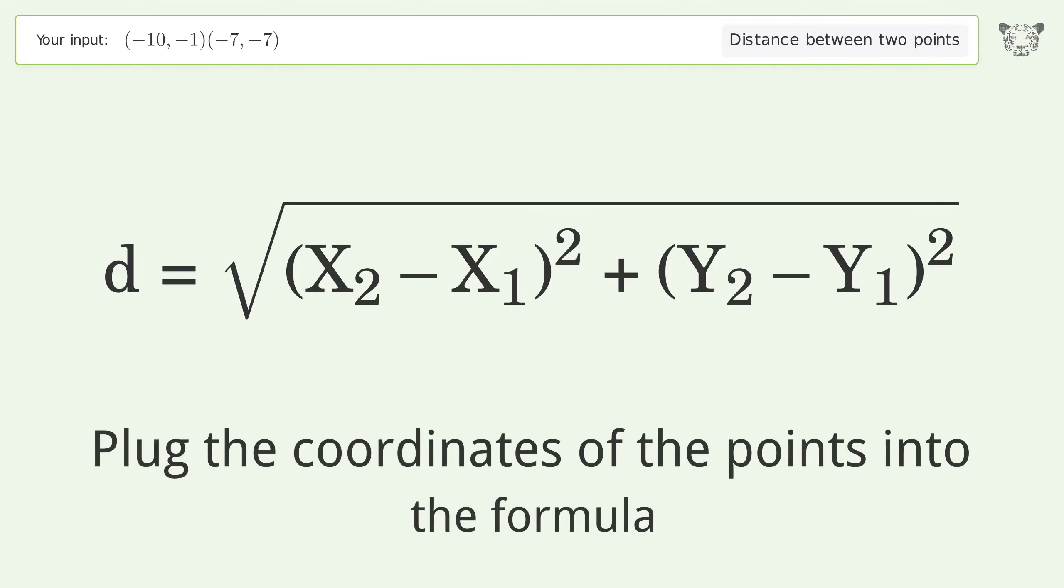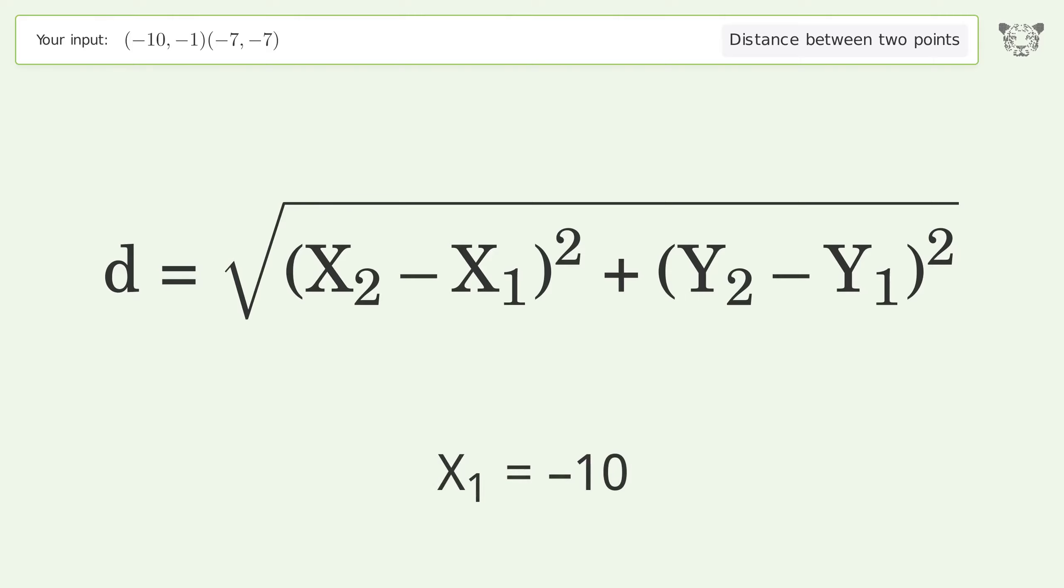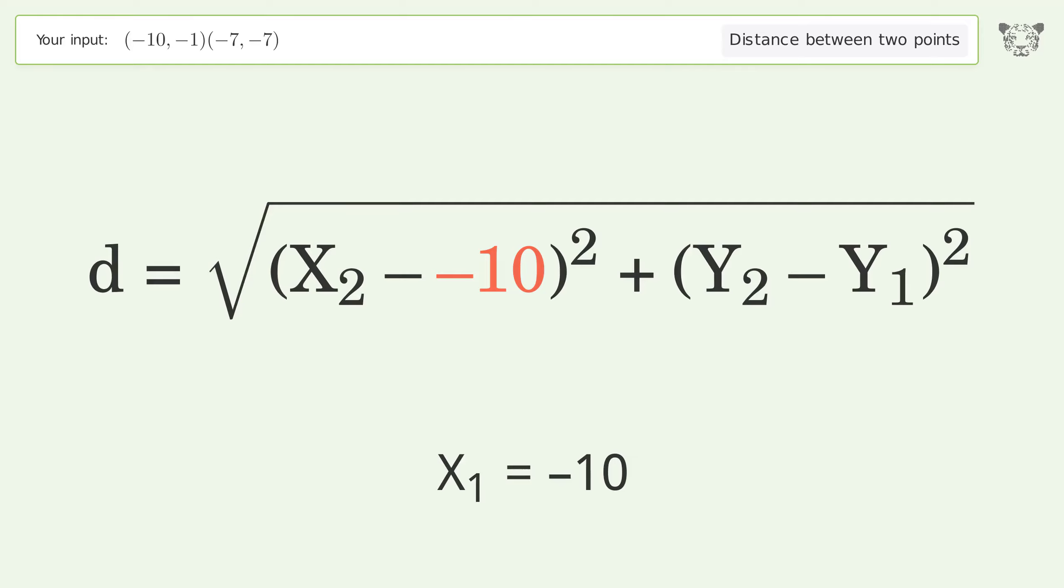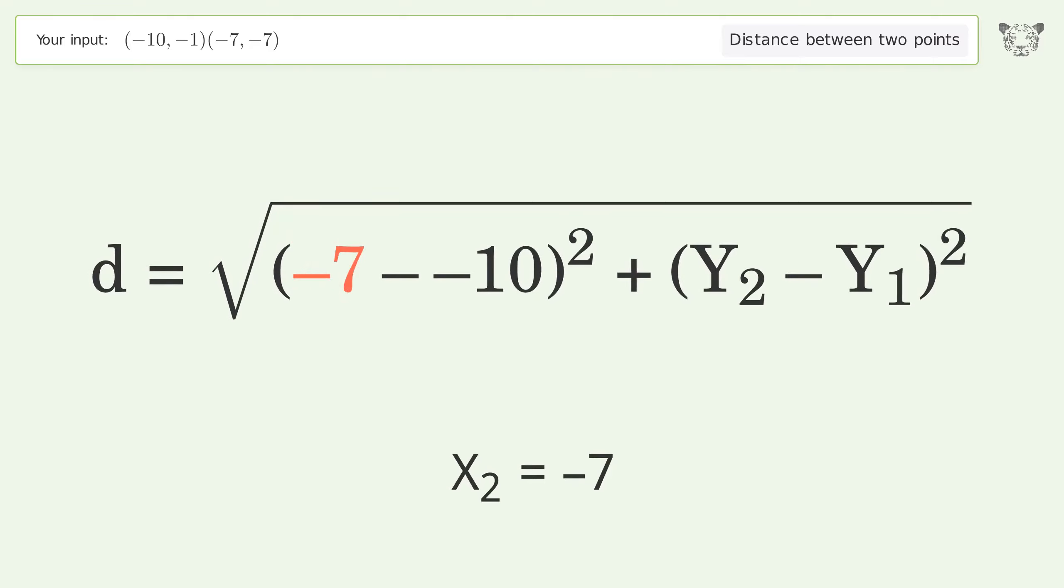Plug the coordinates of the points into the formula. x1 equals negative 10, x2 equals negative 7, y1 equals negative 1, y2 equals negative 7.